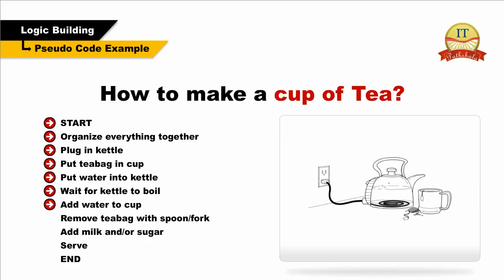Add water to cup. Remove the tea bag with a spoon or fork. Add milk and/or sugar. And finally, serve it. We will now close the pseudocode with the end tag. If you look at this pseudocode, you will realize that all we did is list all the steps involved in making a cup of tea using the minimum number of words.